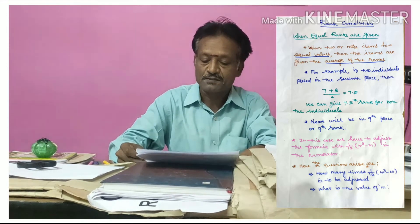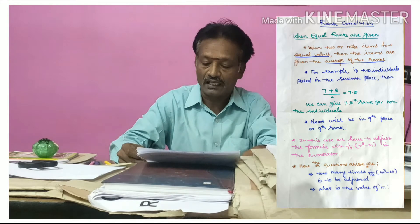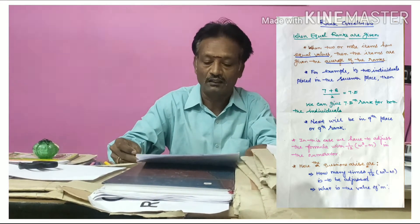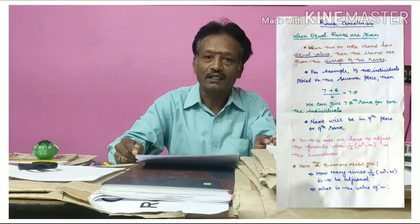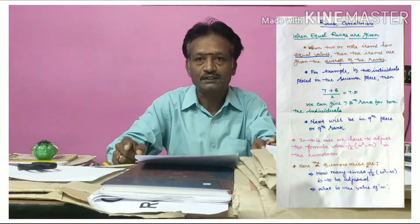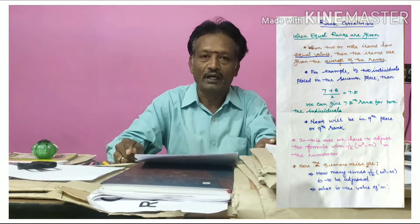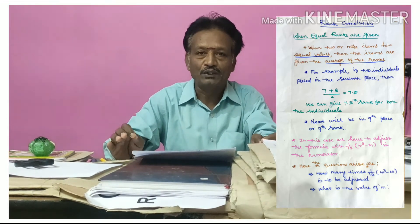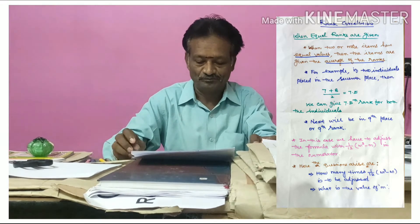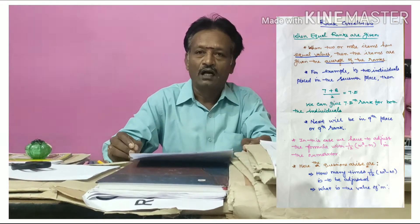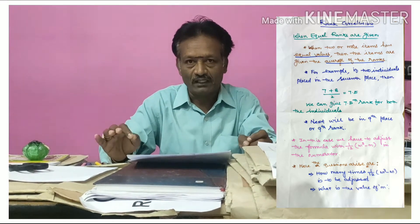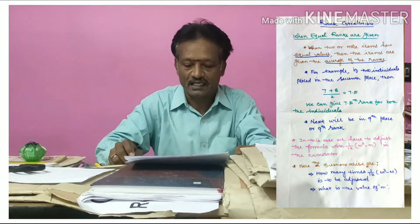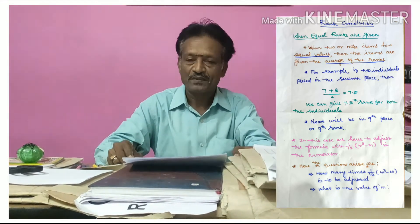In this case, we have to adjust the formula for calculating rank correlation. We add 1/12 × (m³ - m) in the numerator of the original formula. The original formula is 1 minus 6·ΣD² divided by n(n² - 1). The number of times we adjust 1/12 × (m³ - m) depends on how many values are repeated in the given series.